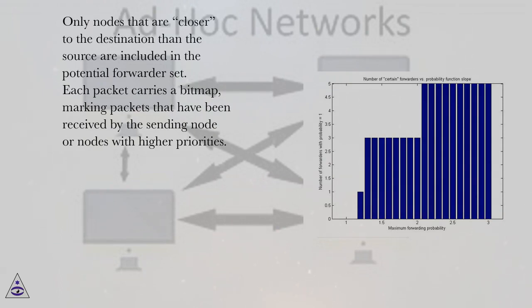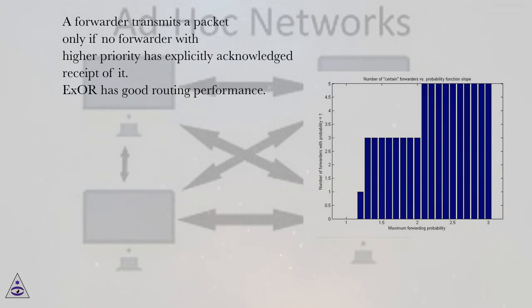Only nodes that are closer to the destination than the source are included in the potential forwarder set. Each packet carries a bitmap, marking packets that have been received by the sending node or nodes with higher priorities. A forwarder transmits a packet only if no forwarder with higher priority has explicitly acknowledged receipt of it.